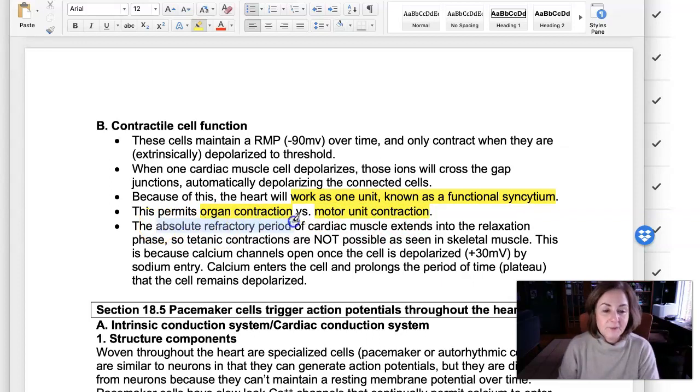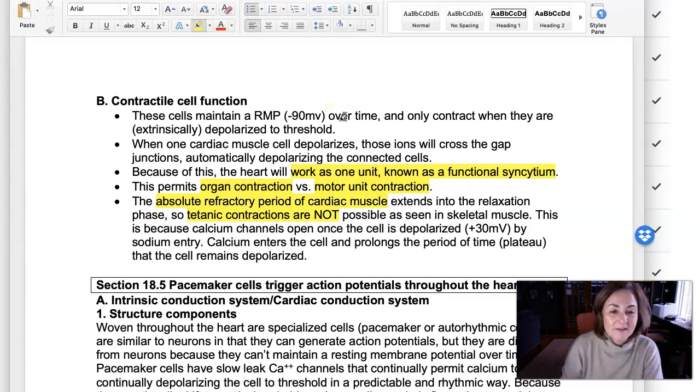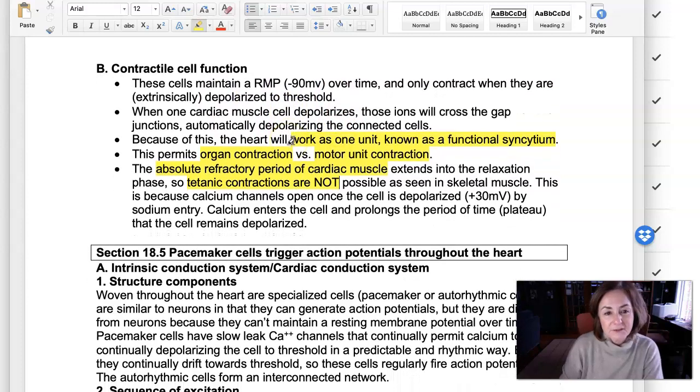And also, if you remember the absolute refractory period, this is an important point. It lasts well into the relaxation phase of cardiac contraction. And so we don't see tetany. That type of contraction is not possible. And if it was possible, that could actually kill us, right? Because the heart would just contract and then not relax again. So take a close look at this.